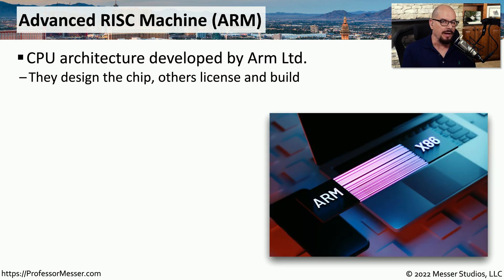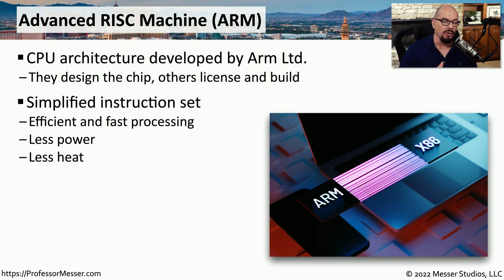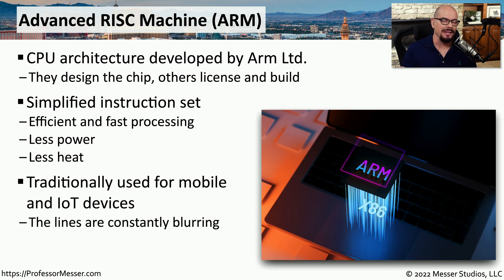There's another family of operating systems called the Advanced RISC Machine, or ARM. This is an architecture developed by ARM Limited — they designed the specifications for the hardware, and then third parties use those specifications to create ARM-based CPUs. The ARM architecture is well-known for being extremely efficient and fast in its processing; it uses less power, creates less heat, and it's perfect for mobile devices. Although we commonly see ARM used for mobile devices and Internet of Things, the capabilities of ARM-based architectures are greatly expanding, and we're starting to blur the lines between traditional 64-bit operating systems and ARM-based operating systems.